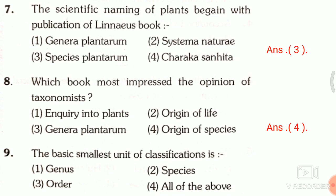Question 9: The basic smallest unit of classification is — first, genus; second, species; third, order; fourth, all of the above. The correct answer is species.